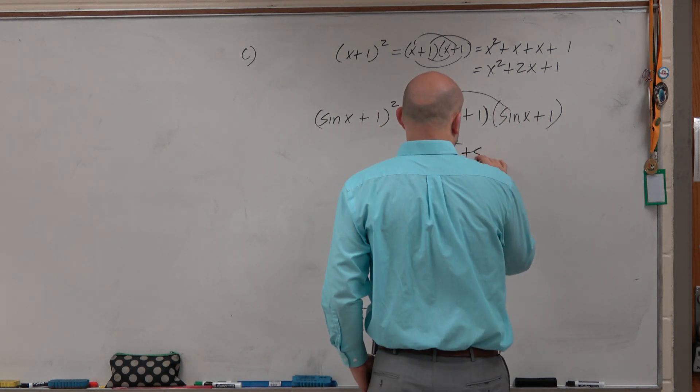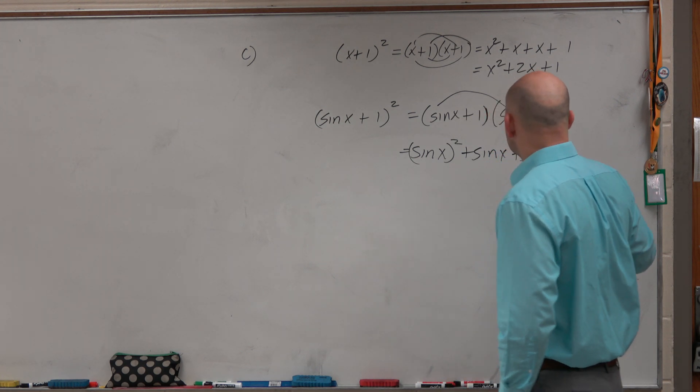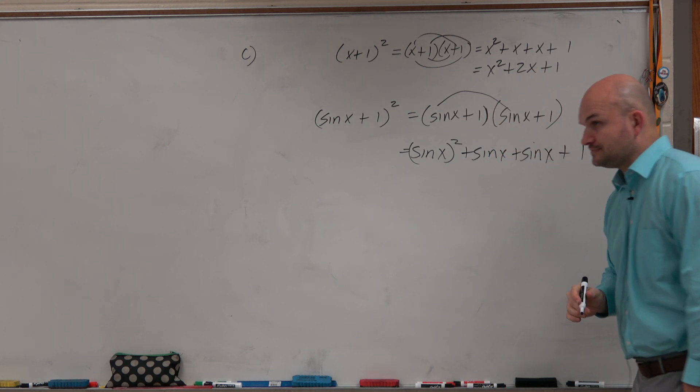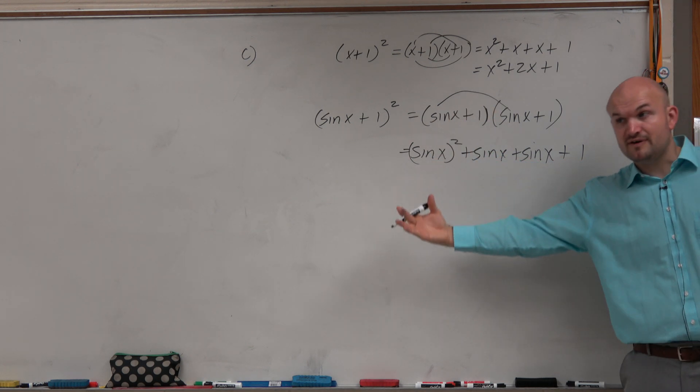And then we have sine of x times 1, which is sine of x, plus sine of x times 1, which is sine of x, and then 1 times 1, which is 1. Now this notation for sine of x squared is perfectly fine.